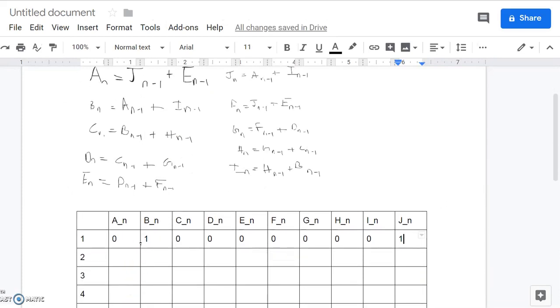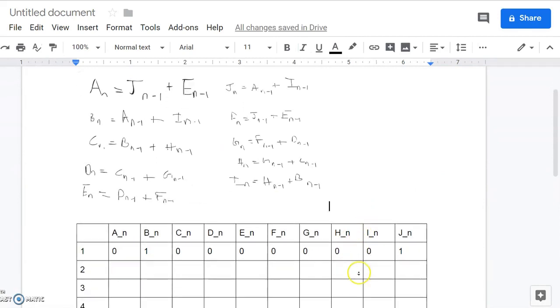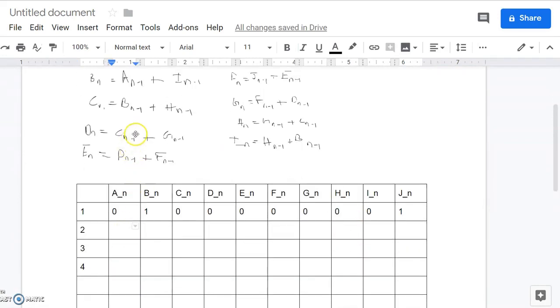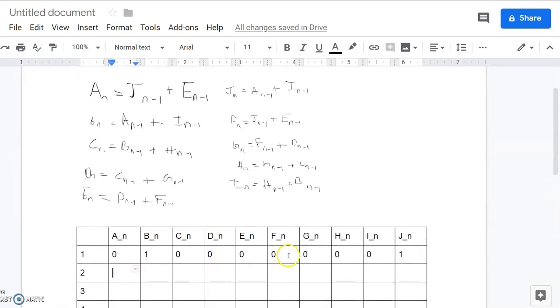And so after one step we can use A of n is equal to J of n minus 1 plus E of n minus 1. A of 2 is going to be equal to J of 1 plus E of 1 which is going to be 1 plus 0. So, that's just 1. And then using the recursion we found here we see that B of 2 would be equal to 0. C of 2 would be 1. D of 2 would be 0. E of 2 would be 0. F of 2 would be 1. G of 2 would be 0. H of 2 would be 0. I of 2 equals 1. And J of 2 is equal to 0.